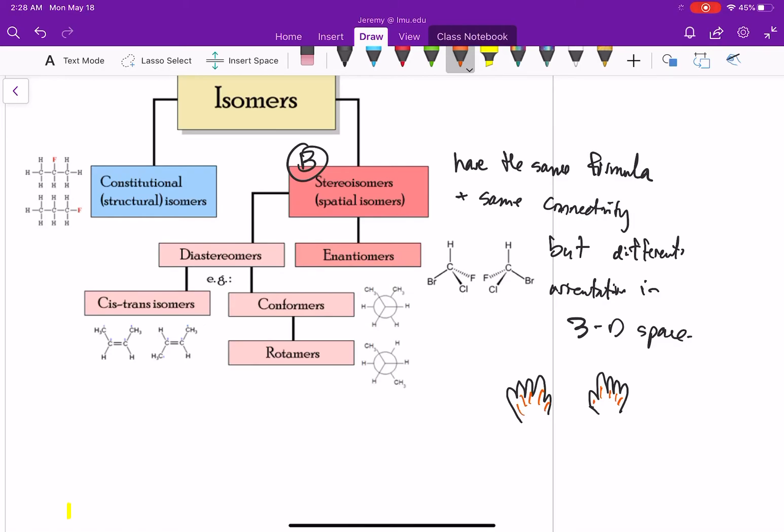But if you take your hands, they're not superimposable. They're really mirror images of each other. And that's a great example of what stereoisomers are. They're spatial isomers, so they're different in how they're oriented in 3D space.